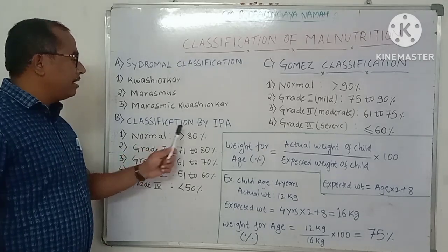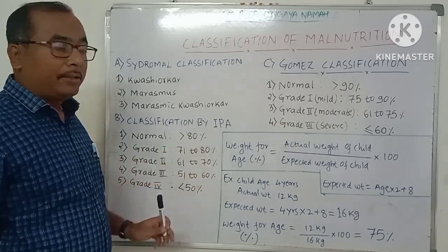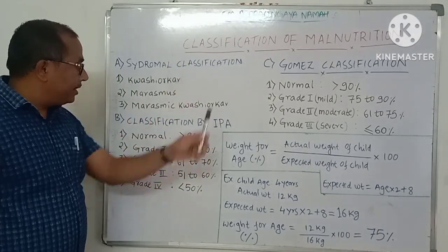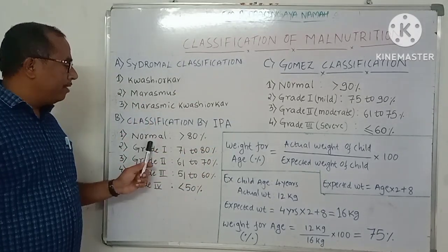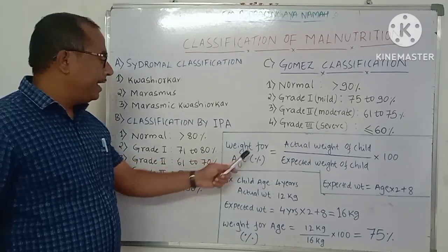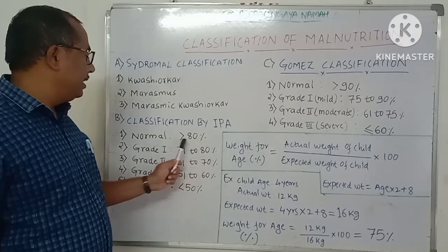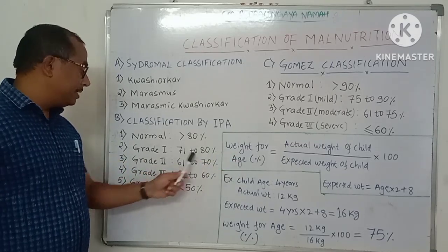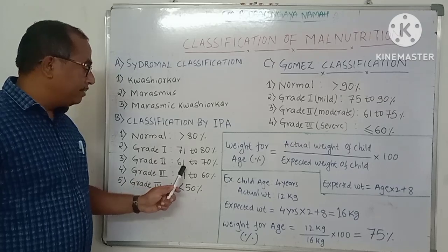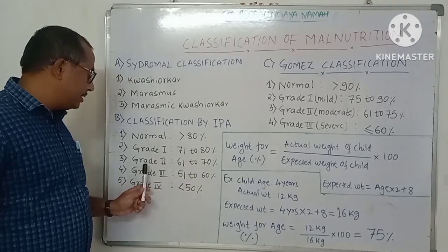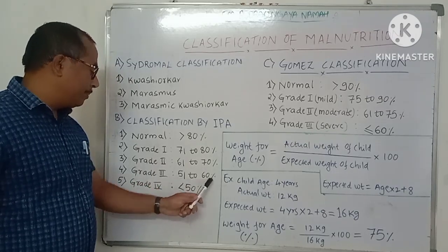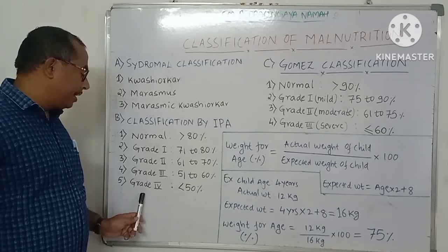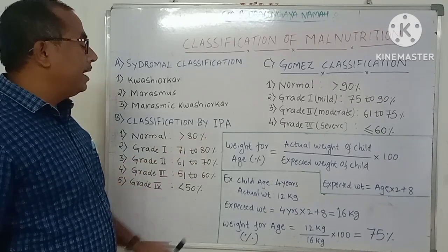Next, classification by the Indian Pediatric Academy: malnutrition is classified into Normal — when weight for age is more than 80%. When weight for age percentage is between 71 to 80%, it is Grade 1. Between 61 to 70% is Grade 2. Between 51 to 60% is Grade 3. And if it is less than 50%, it is Grade 4 according to the Indian Pediatric Academy.